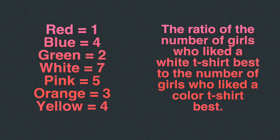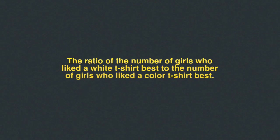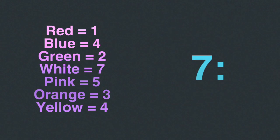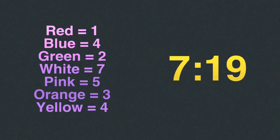What if you were asked to find the ratio of the number of girls who liked a white t-shirt best to the number of girls who liked any other color t-shirt best? First, realize what's being compared: white t-shirts to every other color. How many girls liked white t-shirts best? Seven. To find the total number of every other color, we put them together by adding. After adding up all the other colors except white, we find that 19 girls prefer some color other than white. The ratio of white to non-white t-shirts is seven to 19.